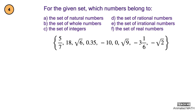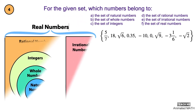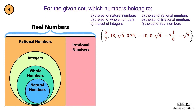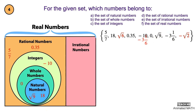Again, let us take the numbers from the given set and place them on the Venn diagram. Square root of 9 is just 3, so it is a natural number. 18 is also a natural number. 0 is a whole number. Negative 10 is an integer. 5 over 7 is rational, as well as 0.35 and negative 3 and 1 sixth. Square root of 6 and negative square root of 2 are irrational numbers.